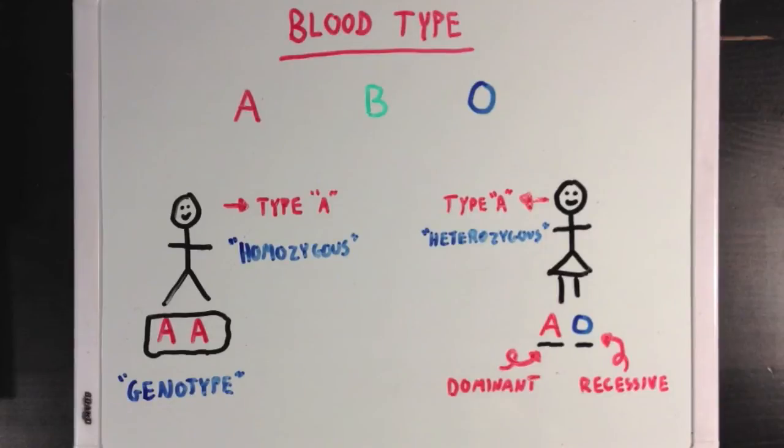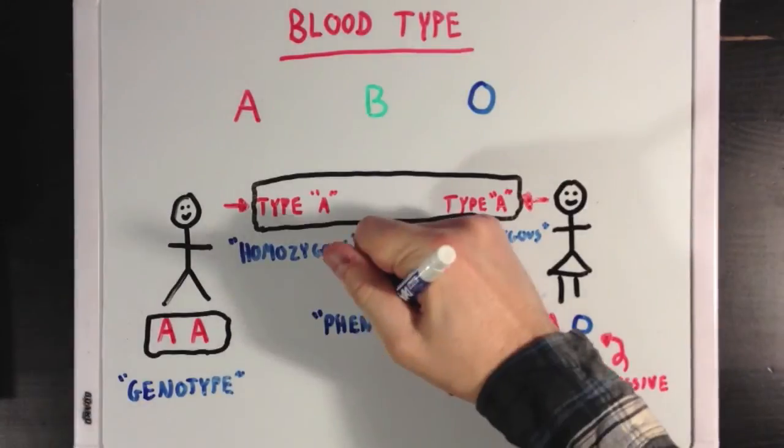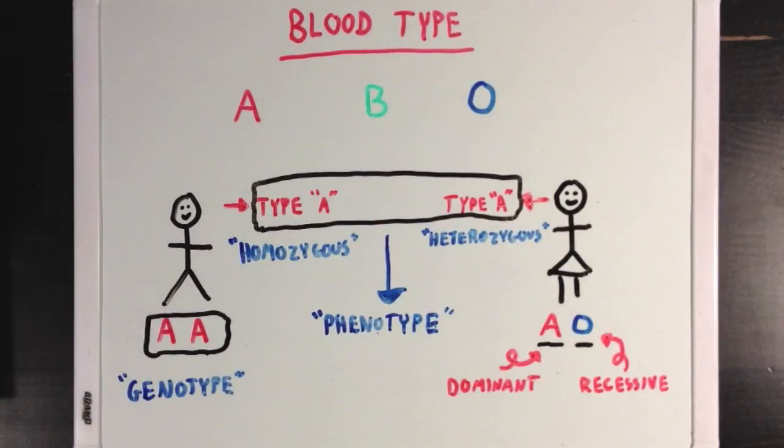But we can also look at a person's physical traits, which we call the phenotype. So for this guy and girl, the phenotype would be blood type A. So you can see that genotype and phenotype are different, but it is possible for two different genotypes to make the same phenotype, since some alleles are dominant over others.